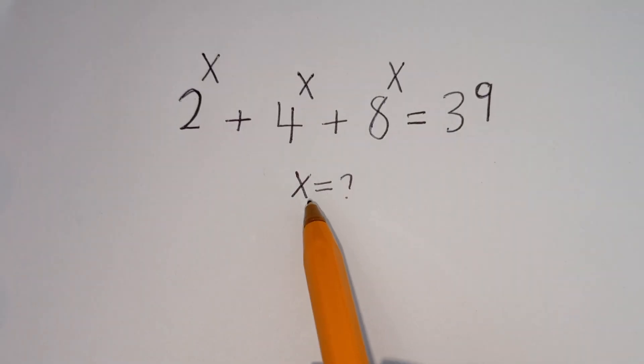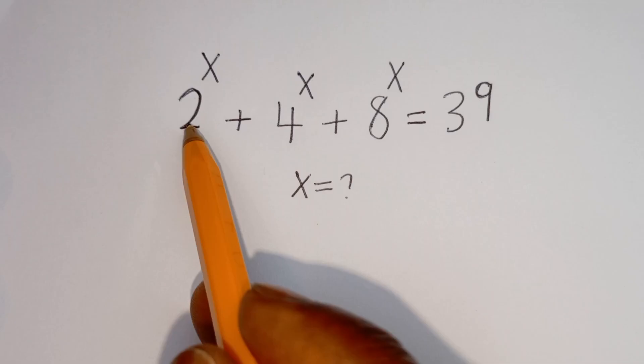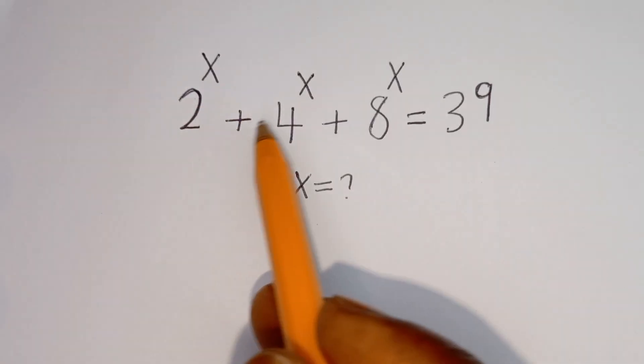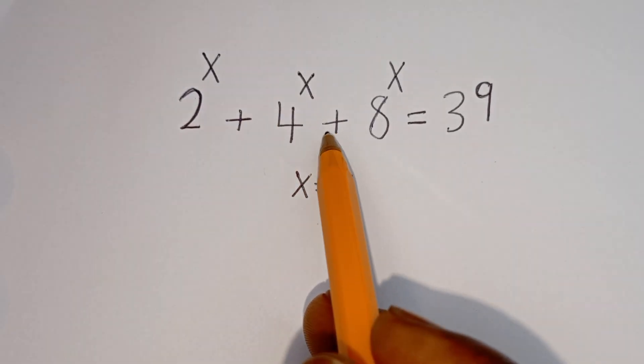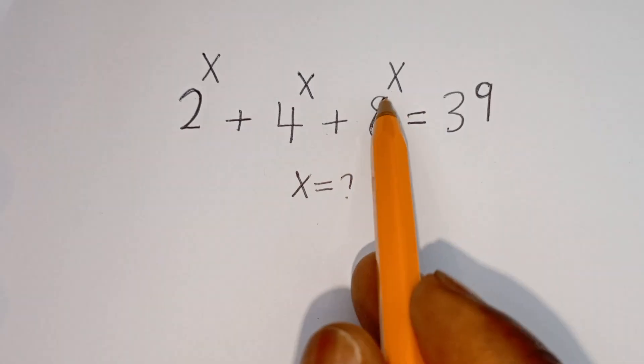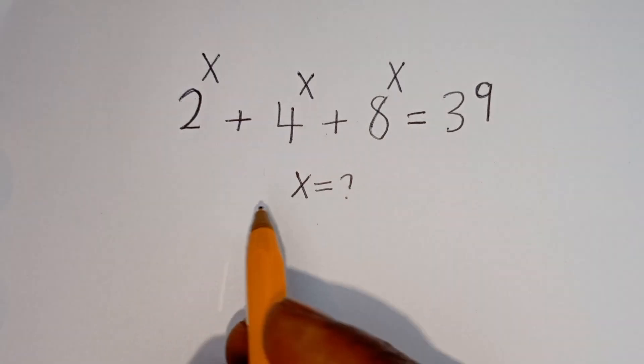Hello. How to solve for S in this equation: 2 to the power of S plus 4 to the power of S plus 8 to the power of S is equal to 39.